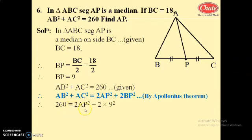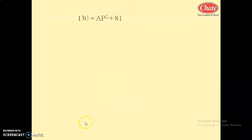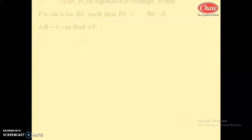Substituting: 260 equals 2 into AP squared plus 2 into 9 squared. Taking 2 as common: 260 divided by 2 equals AP squared plus 9 squared, giving 130 equals AP squared plus 81. Therefore AP squared equals 130 minus 81 equals 49. AP equals square root of 49, so AP equals 7 centimeters.